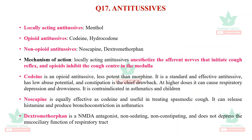Question seventeen is antitussives. Locally acting antitussives include menthol. Opioid antitussives include codeine and hydrocodone. Non-opioid antitussives include noscapine and dextromethorphan. Locally acting antitussives anesthetize the afferent nerves that initiate the cough reflex; opioids inhibit the cough center in the medulla. Codeine is less potent than morphine but is a standard antitussive; due to abuse potential and constipation it is not widely used. At higher doses it can cause respiratory depression and drowsiness, and is contraindicated in asthmatics and children. Noscapine is equally effective as codeine but can release histamine and produce bronchoconstriction in asthmatics. Dextromethorphan is an NMDA antagonist — non-sedating, non-constipating, does not depress mucociliary function, and is widely used in cough preparations.